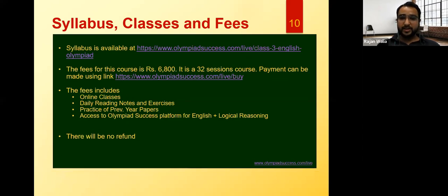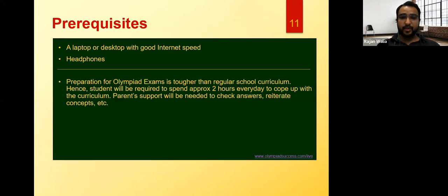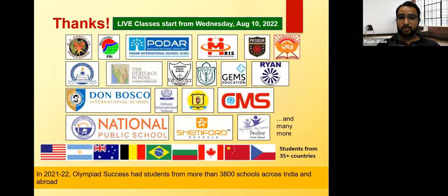The syllabus link has been shared in the chat. The fees for this course are ₹6,800 for 32 sessions. The fees include online classes, daily reading notes and exercises, practice of previous papers, and access to the Olympia Success platform for English as well as Logical Reasoning, with topic-wise mock tests. To join, you need a laptop with good internet speed. Preparation for Olympiad exams is tougher than regular school curriculum. Live classes start from 10th August. We currently have students from 3,800 schools, catering to 35 countries. Now I'll give you a tour of the Olympia Success dashboard.